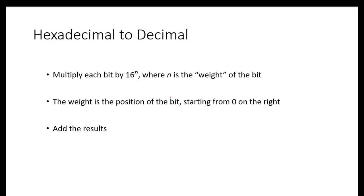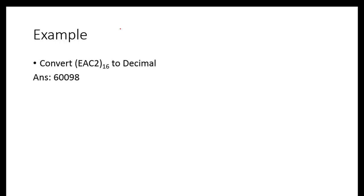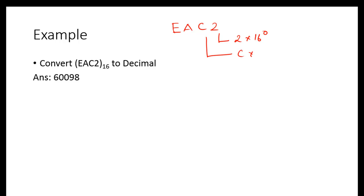Now we consider the hexadecimal number system — the same pattern. All you have to do is multiply with 16 raised to the power n. For example, I have considered EAC2. For understanding, E is 14, A is 10 in decimal, and C is 12 in decimal. So we calculate: 2 × 16⁰, C × 16¹, A × 16², and E × 16³.